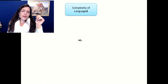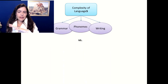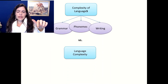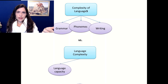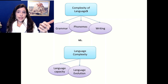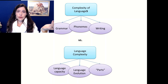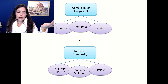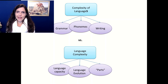Everything is complicated. You have to separate between the complexity of languages — the grammar, the phonemes, the writing, which is already super complex — and the complexity of language as a capacity. So you have the language capacity and how it came to exist, language evolution which we've been talking about, and all the physical parts that help us to talk. Where did all that come from? And when? And how? Gradually? I don't think so.